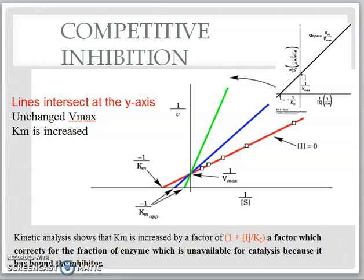In order to determine the kinetic parameters for competitive inhibition, you need to draw a Lineweaver-Burk plot. From the plot, you can see the interception at the y-axis, the interception at the x-axis, and the slope of the graph. To plot the graph, you need data on the enzyme reaction without inhibitor and data with the enzyme reaction with inhibitor.